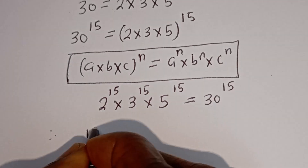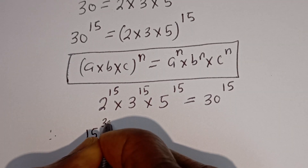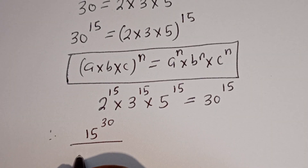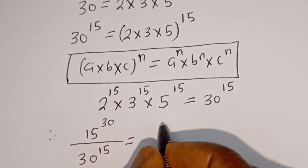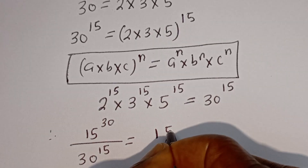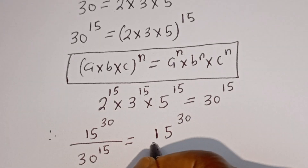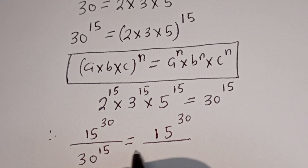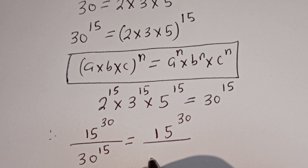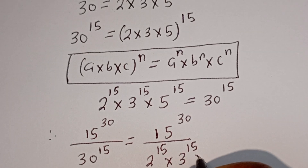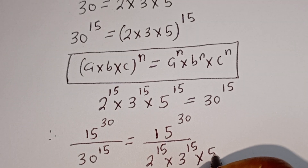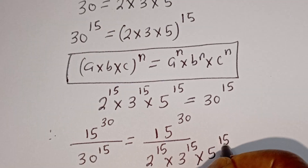Therefore, 15 to the power of 30 divided by 30 to the power of 15 is equal to 15 to the power of 30 divided by 2 to the power of 15 multiplied by 3 to the power of 15 multiplied by 5 to the power of 15.